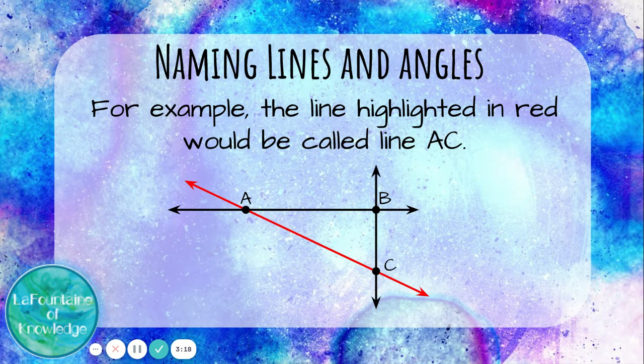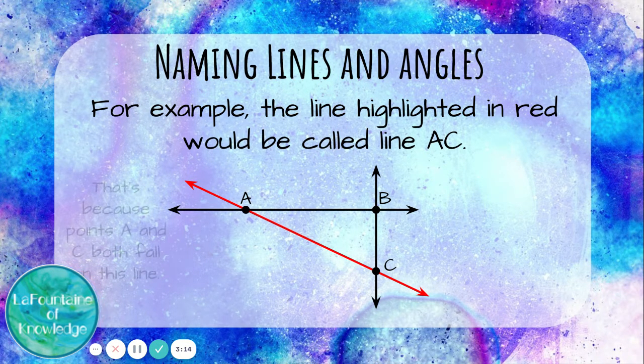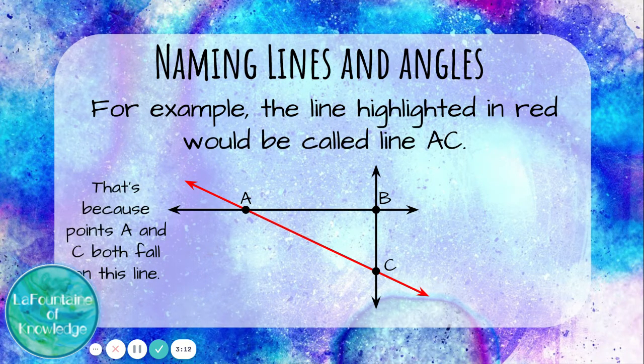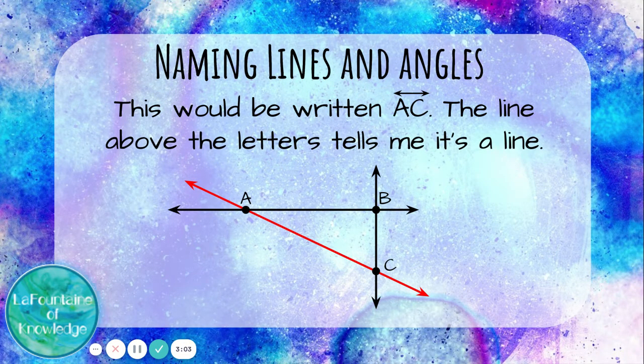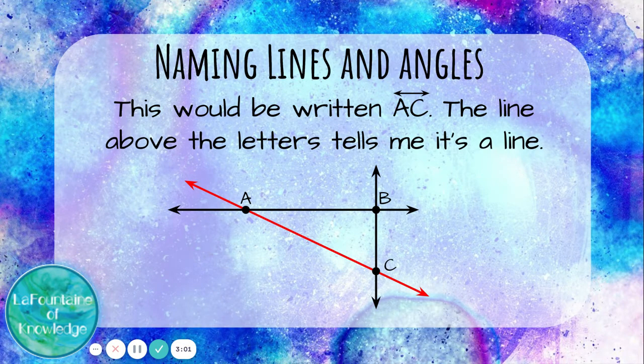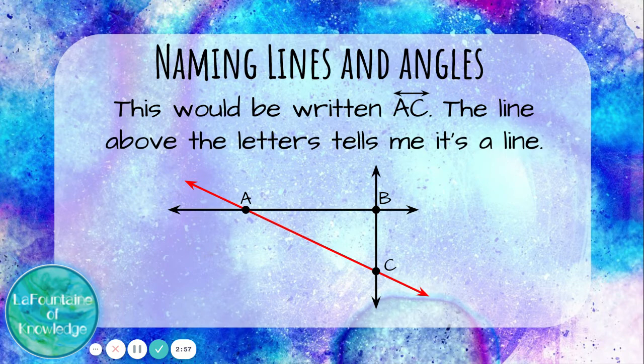For example, the line highlighted in red would be called line AC. That's because points A and C both fall on this line. We could trace from one to the other, like a dot to dot. This would be written AC with a little line above it. The line above the letters tells me that it's a line instead of a line segment or maybe a ray.